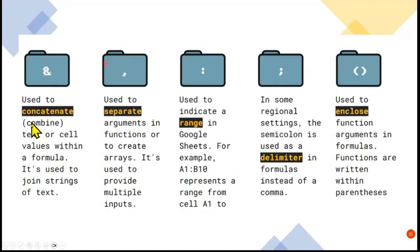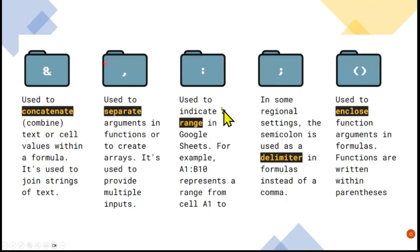The ampersand is used to concatenate, which means combine — it will combine the text of cell values. A comma separates arguments, and a colon or semicolon indicates a range. When doing formulas we also need to use brackets — we open the bracket and we close the bracket.